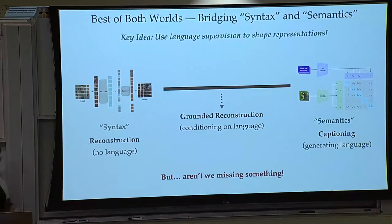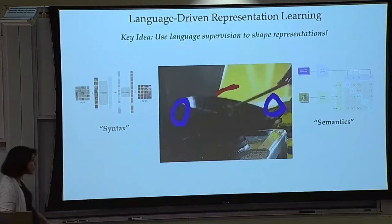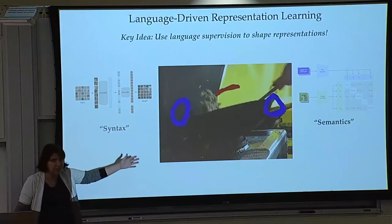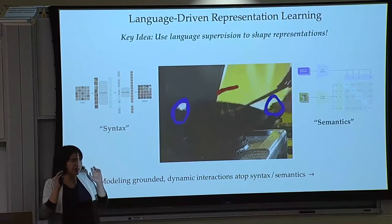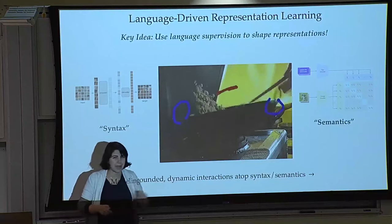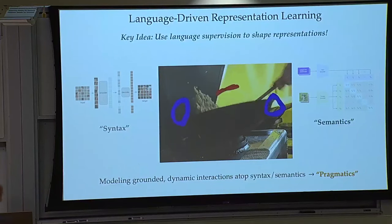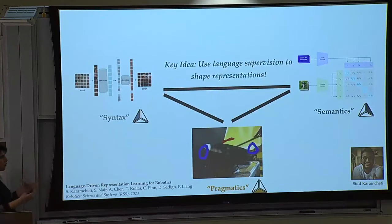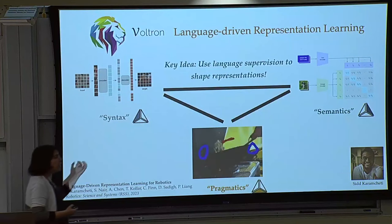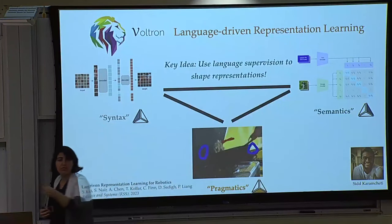There are other things not yet modeled, like dynamics. Any robotic task is not just about syntax and semantics — we have motion, dynamics, the world changing, dynamic interactions. You could think of that as pragmatics. This brings me to the model we trained, Voltron, which is a language-driven representation learning model — the first attempt to get syntax, semantics, and some understanding of dynamics, capturing multi-frame changes in the environment. We're trying to get almost three things in that representation to be useful for downstream robotics tasks.